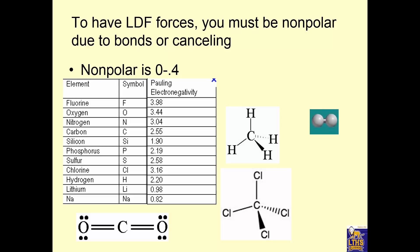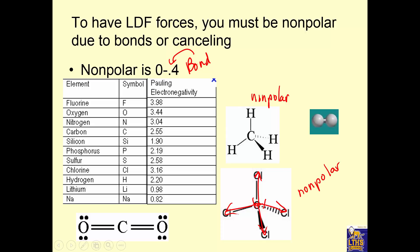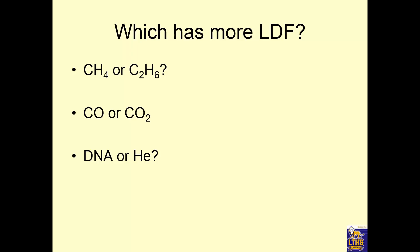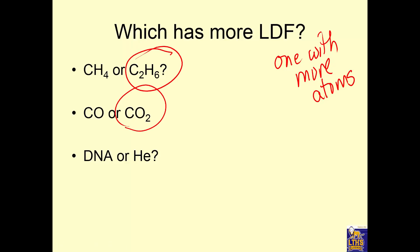To have London dispersion forces, it has to be non-polar due to bonds or to canceling. Non-polar because no arrows, non-polar because the atoms are the same, non-polar because the arrows cancel. If you have non-polar molecules because of canceling or because of non-polar bonds, then you will have London dispersion forces only. Now if you only have London dispersion forces, which one's going to be stronger? The one with more atoms, because more atoms means more electrons. More electrons means more chances of inducing those dipoles.